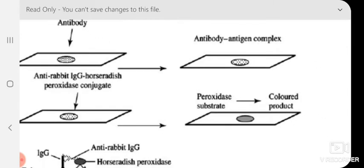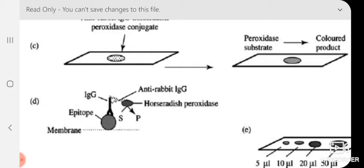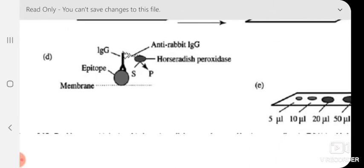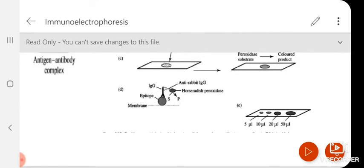If we give the substrate for the specific enzyme, it will convert the substrate to a colored product, which can be visualized with the naked eye. So if we take different amounts or different concentrations of antigen, by seeing the color change we can also perform quantification. This is a dot blot experiment.